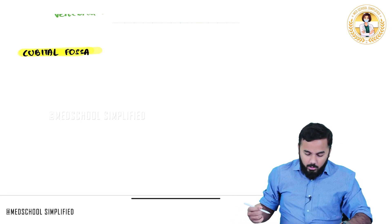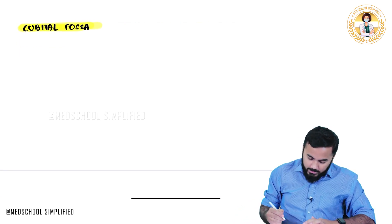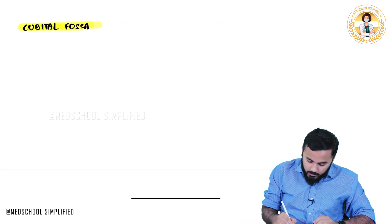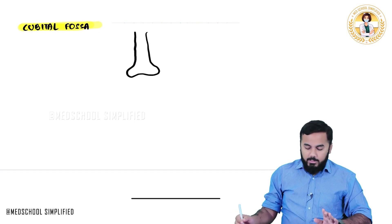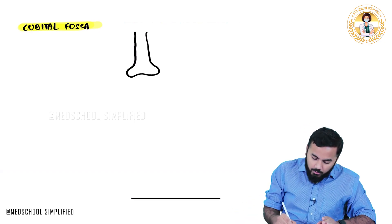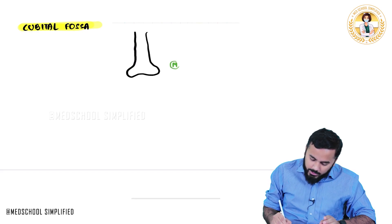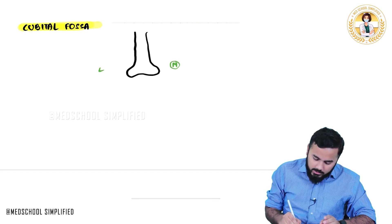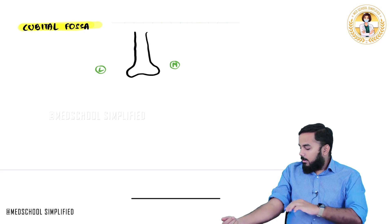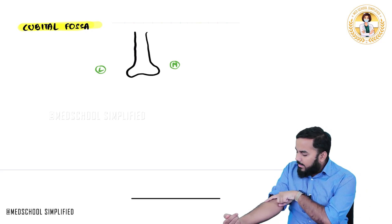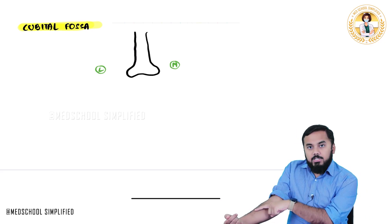Let us draw two important things here. First is the humerus. In this humerus, this is called the medial epicondyle and this is called the lateral epicondyle — medial and lateral epicondyles.